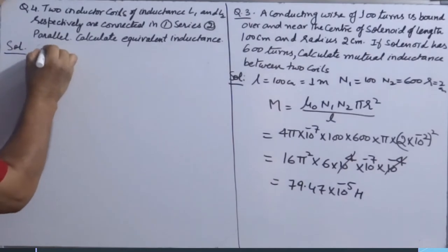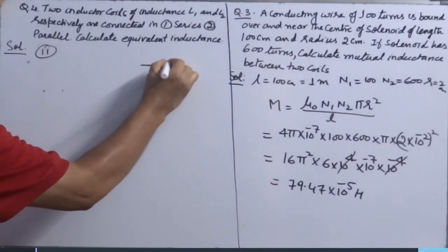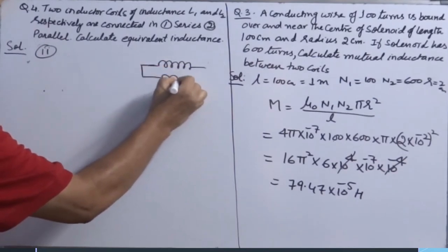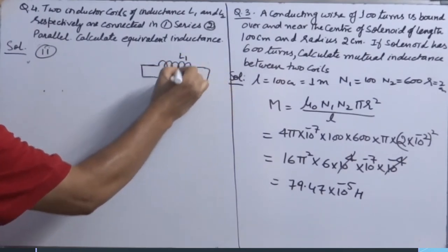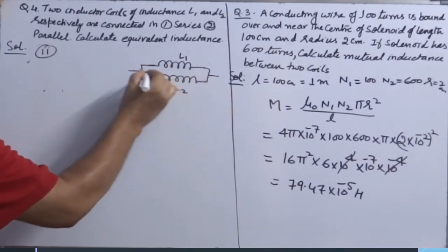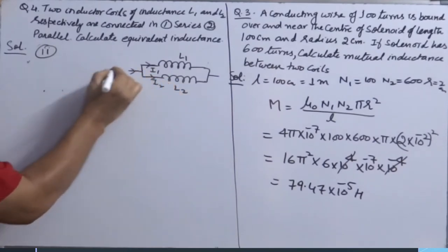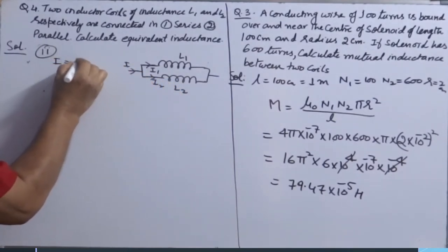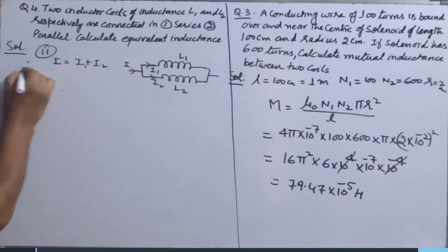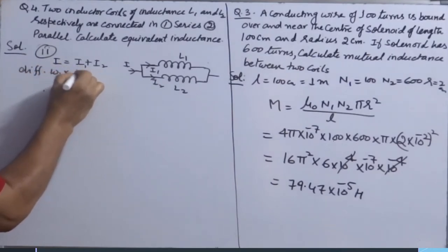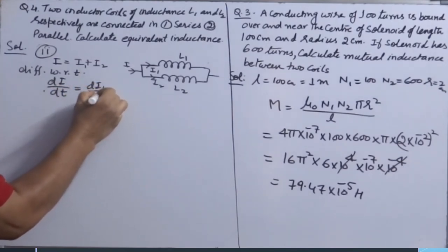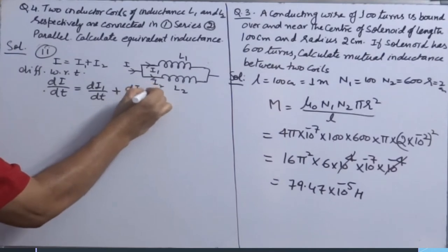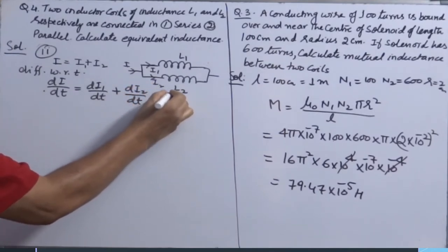In parallel combination, two coils are connected like this, L1, L2. Potential difference same, current will be different. In parallel, total current I equals I1 plus I2. Differentiating with respect to T, dI over dT equals dI1 over dT plus dI2 over dT.